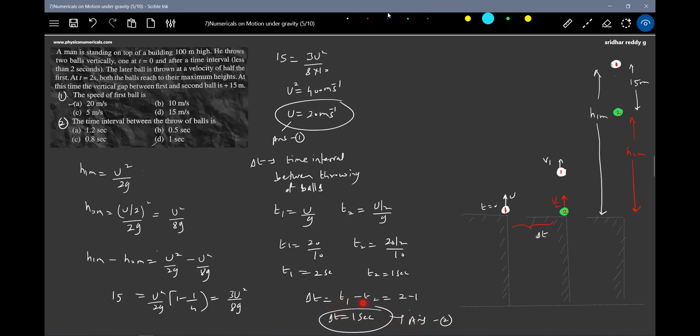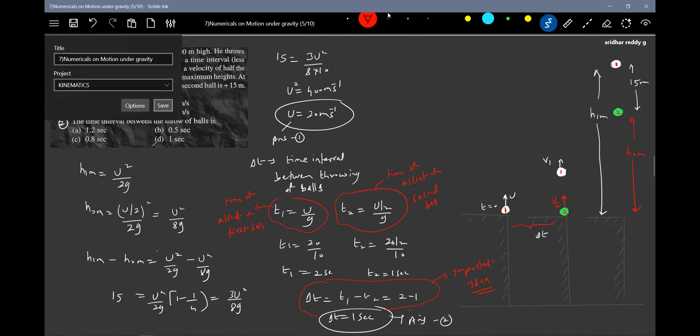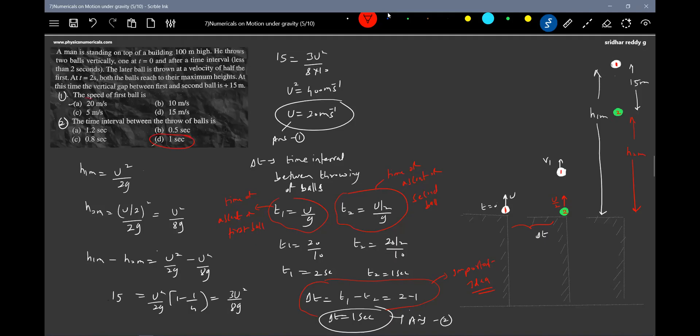This is, I think, a very important idea here. How you are writing this is very essential. The difference in the time of ascent will be the time interval between the throw. This will be time of ascent of first ball, this will be time of ascent of second ball. This will be our answer. Finally we got that.